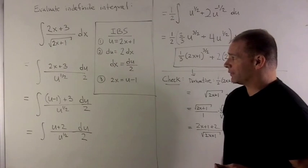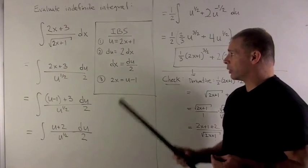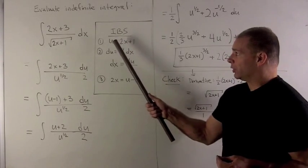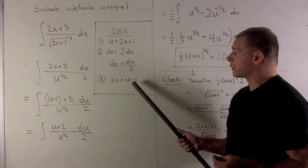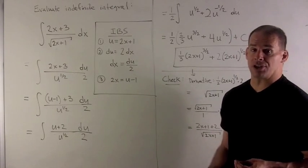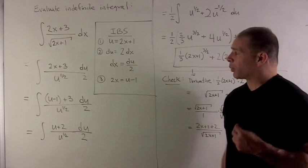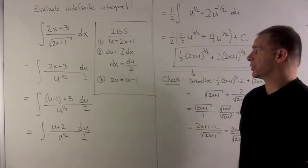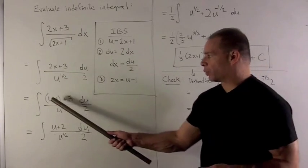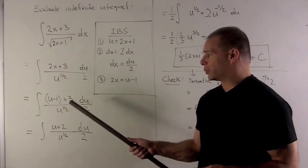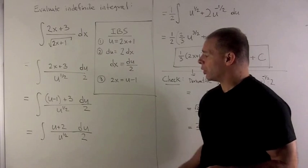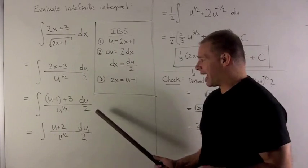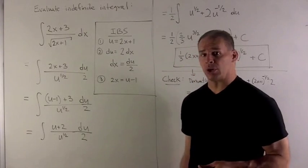So can we get rid of 2x plus 3? We look at what we have from our substitution, and I notice 2x is equal to u minus 1. So I could even solve for x by itself, but we're only asked for 2x, so why don't we just stop at 2x. I could put a u minus 1 in here, so I get u minus 1 plus 3 over u to the 1 half du over 2, and we notice everything is in u, so we're good to go.